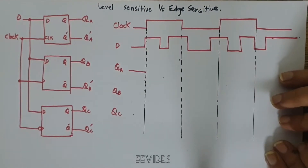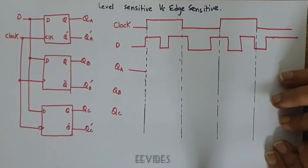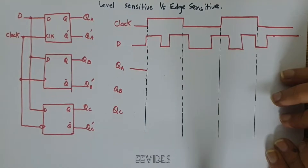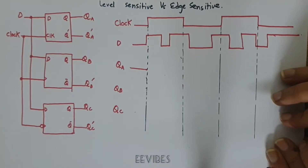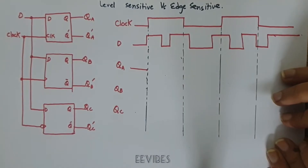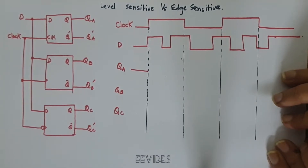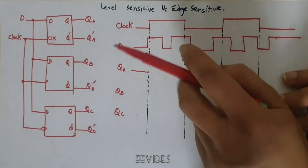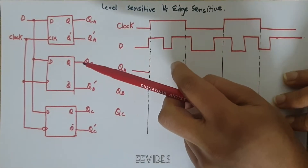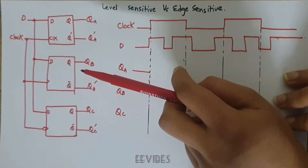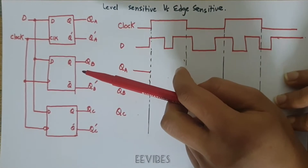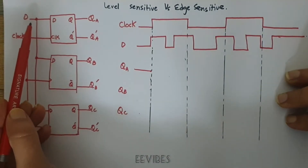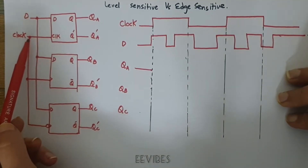Hi guys, this is Asma Mishtak from the Double Wipes, and in this lecture I'll explain the difference between the level-sensitive and the edge-triggered storage elements. This figure is showing three different types of storage elements being driven by the common input signal D and the clock signal.